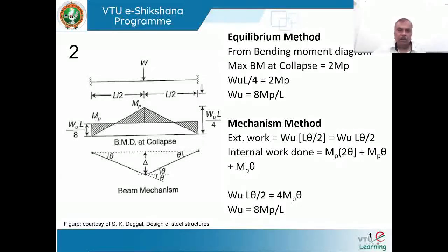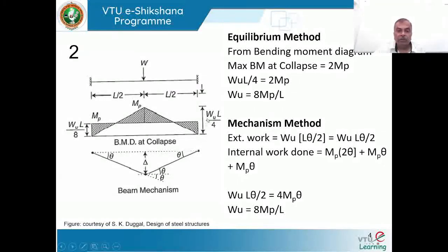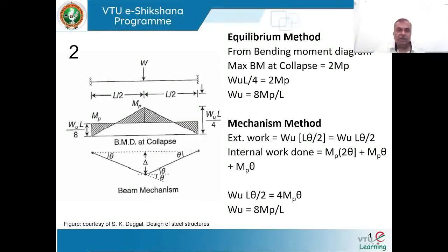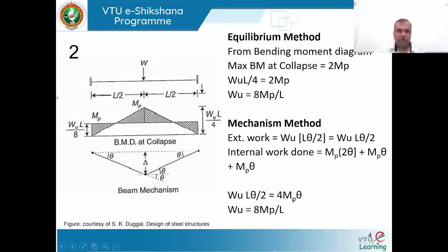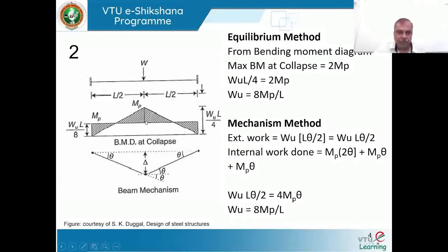From the bending moment diagram, the maximum value from the free bending moment is WL/4, where W is the ultimate load. At the time of failure, we have the statically admissible bending moment diagram. The maximum positive moment at the center reaches mp — one plastic hinge forms there — and the end moment is also maximum at mp.